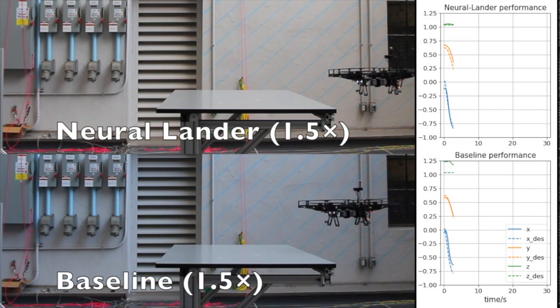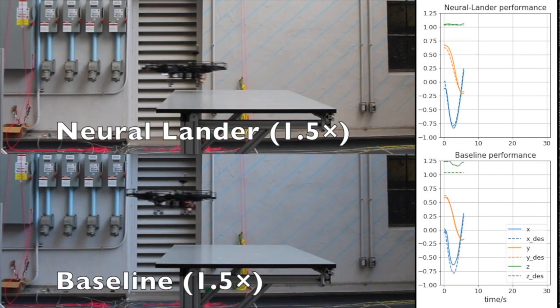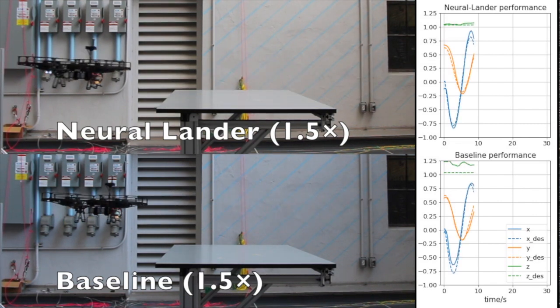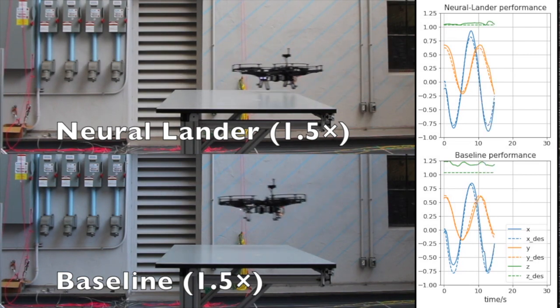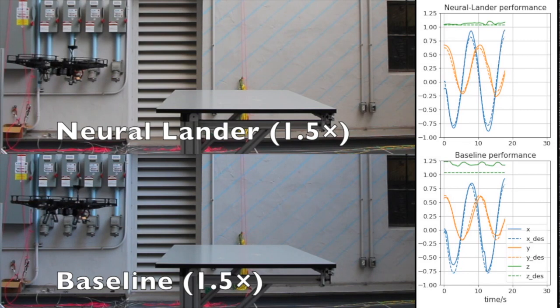Our final tests show the Neural Lander can work in complex environments. First, we retrained F_a for the new environment. The task we chose was to fly the drone very close to a table. As before, the Neural Lander outperformed the baseline controller in tracking the desired height and the desired horizontal position.